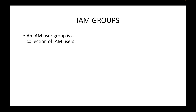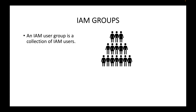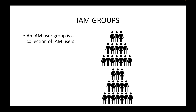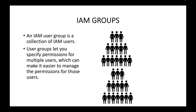An IAM user group is simply a collection of IAM users. You can maintain different groups which are collections of IAM users who will be accessing your AWS account or AWS resources. If you want to maintain a common collection of users, we can make use of IAM groups, and these IAM groups let you specify permissions for multiple users.